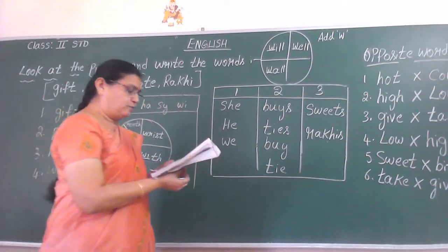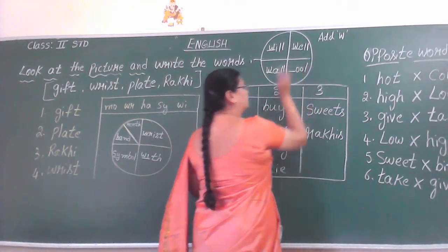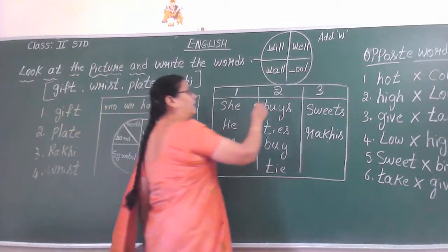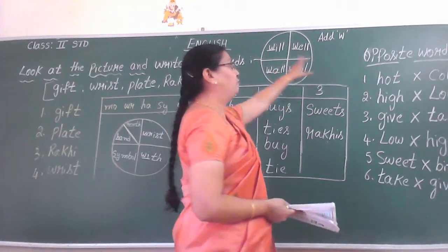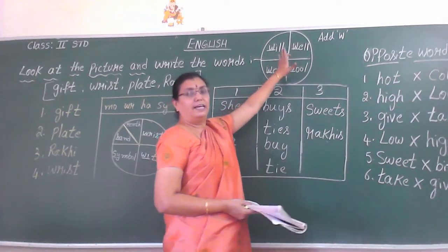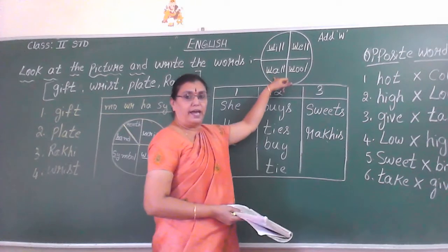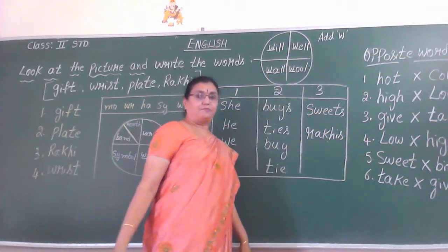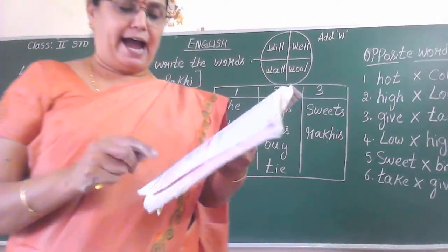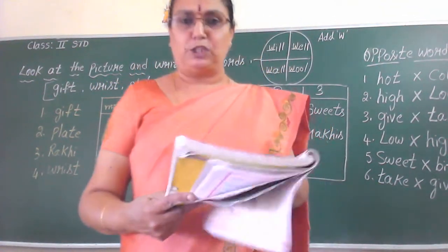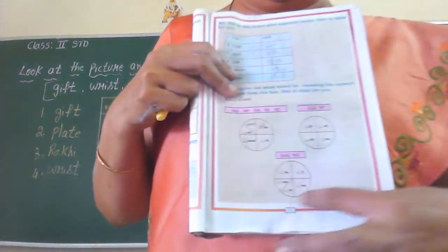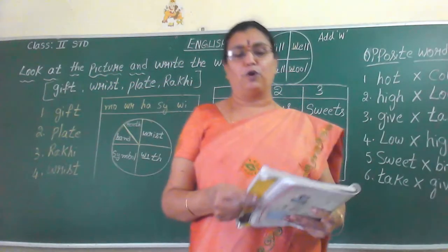Next, last one: dash O-O-L — which word do you have to use? W-O-O-L — wool. So by using this wheel, add W wherever it is necessary: W-I-L-L, W-E-L-L, W-A-L-L, W-O-O-L. To add W-H as well. The last wheel you have to do for homework, children — in the textbook only you can fill that. It is easy — by using W and W-H you have to complete that wheel. Complete this wheel as a home activity. In the textbook only you have to complete and do that.